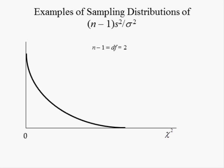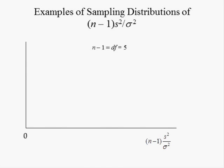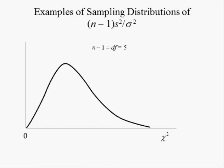Since n minus one, S-squared, and sigma-squared are all positive, chi-square is positive; thus the distribution is over positive values. For n equals three, the mean of the distribution equals the degrees of freedom, which is two, and the variance equals two times the degrees of freedom, which is four. If the sample size is six, the degrees of freedom equal five, chi-square is again positive, the mean of the distribution is five, and the variance is two times five, which is ten.